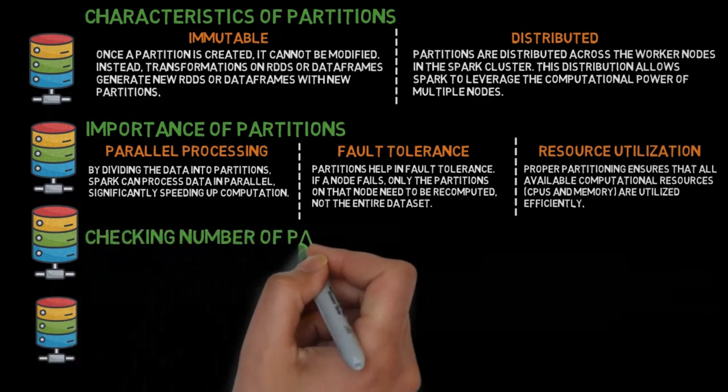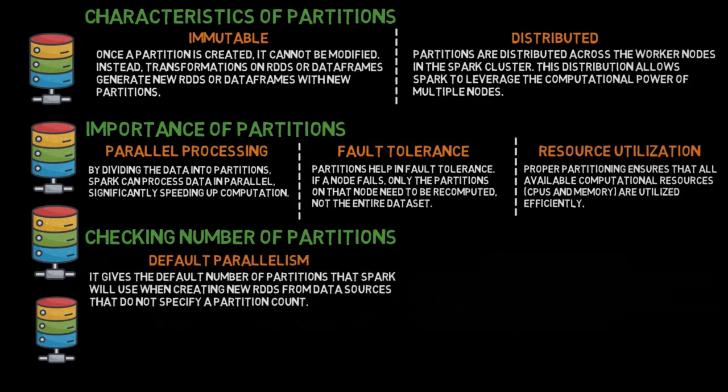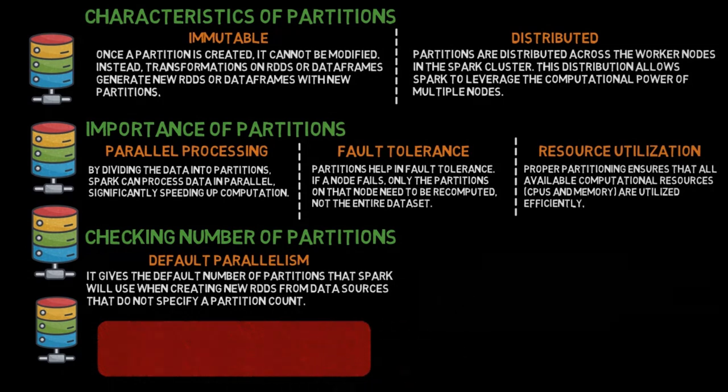Checking number of partitions. Default parallelism: It gives the default number of partitions that Spark will use when creating new RDDs from data sources that do not specify a partition count.